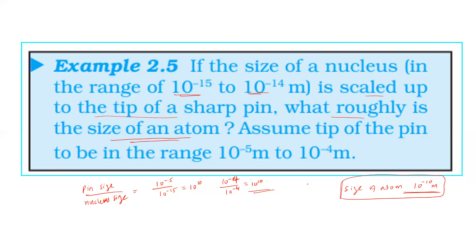The tip of a pen is measured on the order of 10⁻¹⁰ meters. The size of the pin with respect to the atom is of the order 10¹⁰. So 10⁻¹⁰ times 10¹⁰ equals 1 meter. When the atom is scaled up to the size of 1 meter, the question is answered.